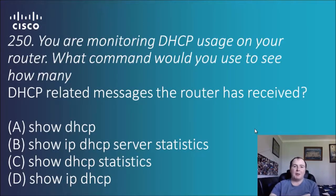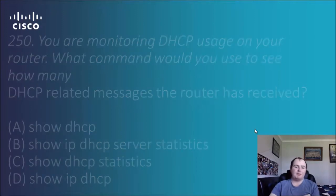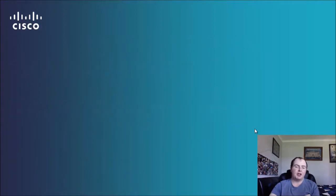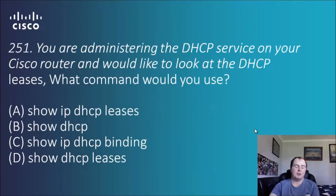Question 250: you are monitoring DHCP usage on your router. What command would you use to see how many DHCP-related messages the router has received? The options include: show DHCP, show IP DHCP service statistics, show DHCP statistics, and show IP DHCP. The answer is B — 'show IP DHCP service statistics'. Cisco's commands are usually short and sweet but this one is a bit longer.